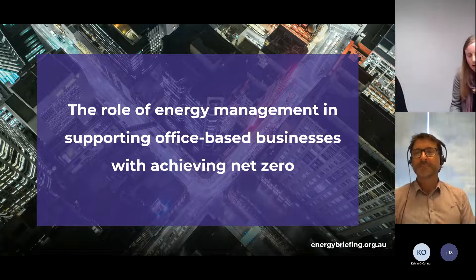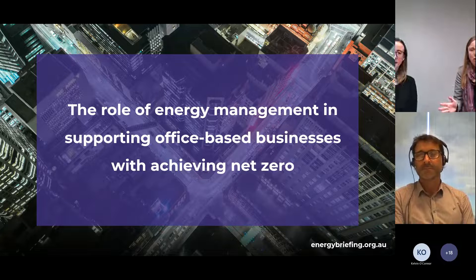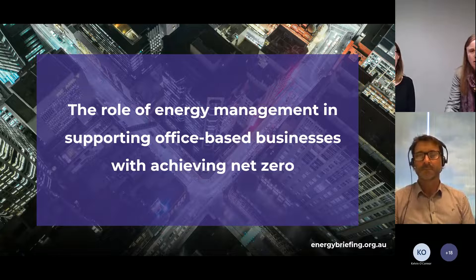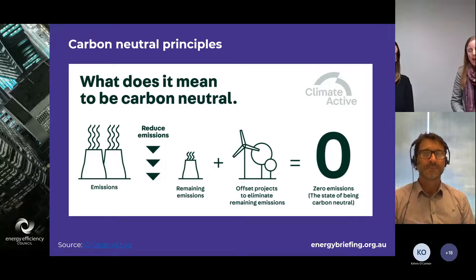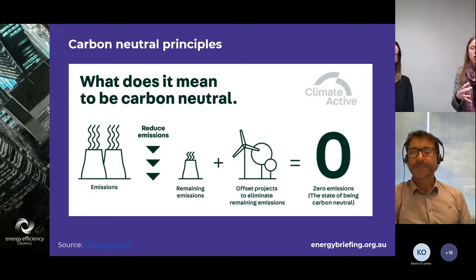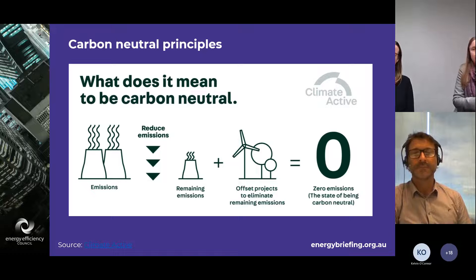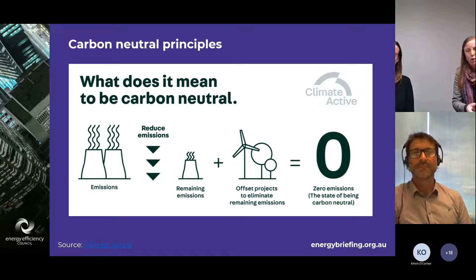Thanks, Vic. Every way you look, there are calls for reaching net zero — so the question now is, how do we actually get there? In Australia, we have a framework called Climate Active, a Commonwealth Government program that sets out carbon neutral principles and how businesses can reach carbon neutrality. The key principle is: reduce emissions first, then offset whatever you can't reduce. You do that with energy efficiency upgrades, switching electricity to renewables, and electrifying your gas processes.